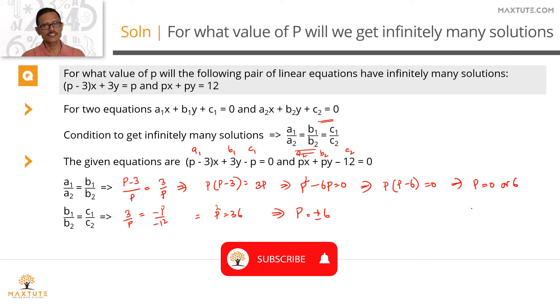The value of p that matches in both these ratios is when p equals 6. That's the answer to the question.